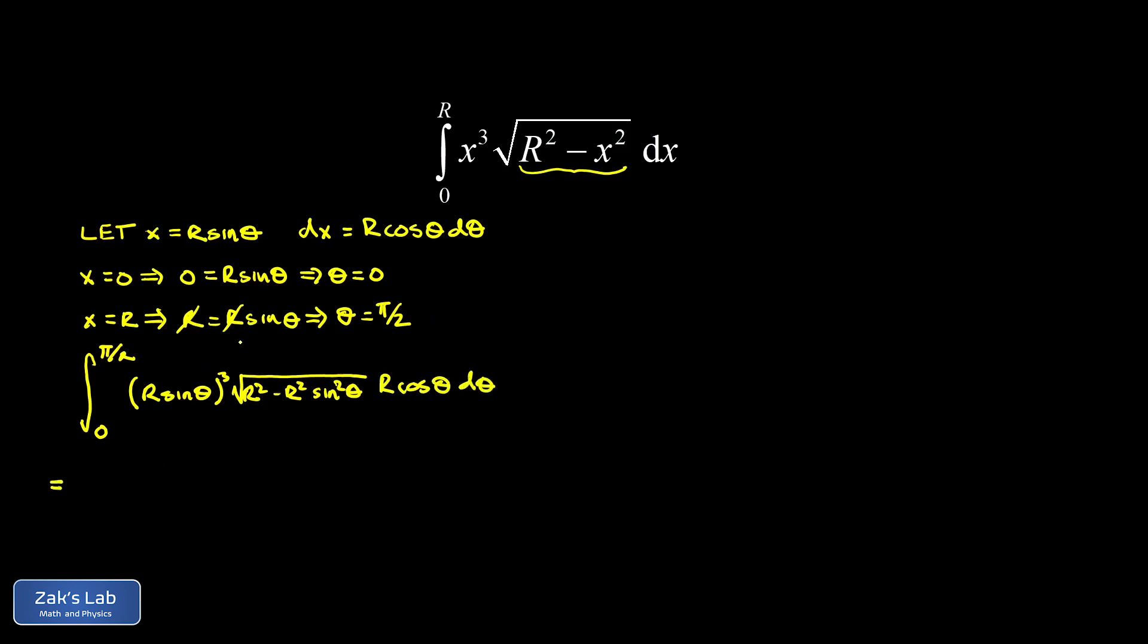Now we're going to end up with a lot of factors of r out of this. In this first term, I have an r cubed that I can pull out. In my square root, I have an r squared that can factor out of the interior, but that becomes an r when I pull it out of the square root. So there's a fourth factor of r, and then I have a fifth factor of r sitting in this differential term. So I'm just going to move the r to the fifth out in front of the whole thing.